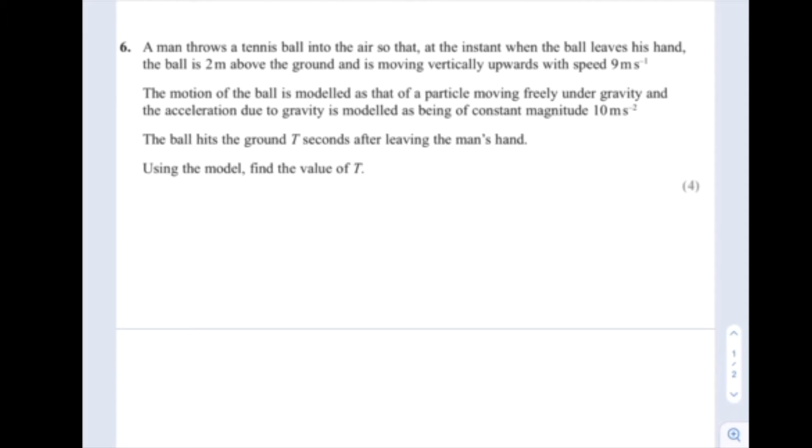A man throws a tennis ball into the air so that at the instant when the ball leaves his hand, the ball is two meters above the ground and is moving vertically upwards with speed nine meters per second. The motion of the ball is modeled as that of a particle moving freely under gravity and the acceleration due to gravity is modeled as being of constant magnitude 10 meters per second squared. The ball hits the ground T seconds after leaving the man's hand. Using the model, find the value of T.